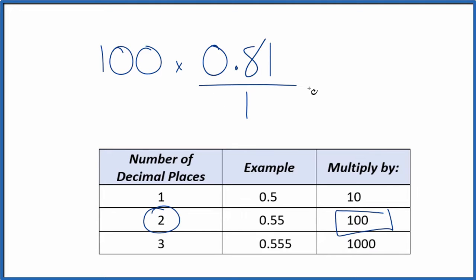So 100 times 0.81, that equals 81. So now we have a whole number. But we can't just multiply the numerator by 100. We also need to multiply the denominator. That's because 100 divided by 100, that's 1. So we're multiplying by 1. We don't change the value. We just change the way it's represented.